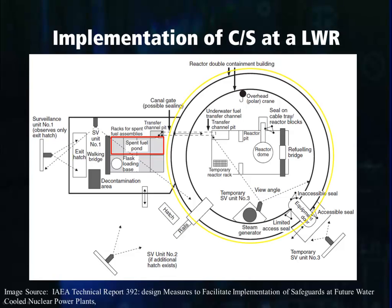This means there must be two complementary containment surveillance measures — one applied over the storage pool and one applied on reactor containment. You can see here that the storage pool has two video cameras. One surveillance unit is monitoring the pool and the area itself, while another surveillance unit is monitoring the exit hatch.